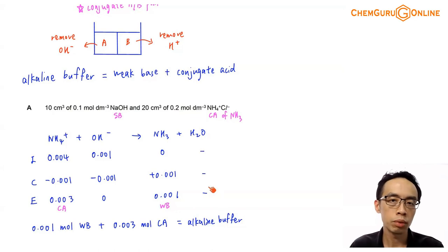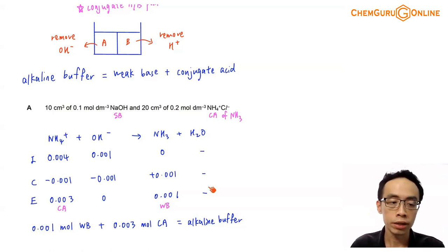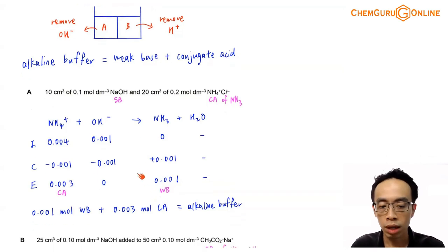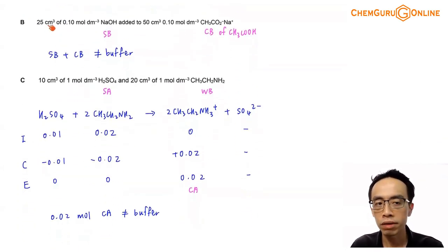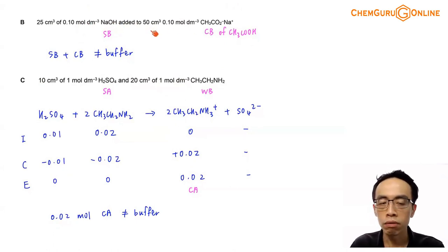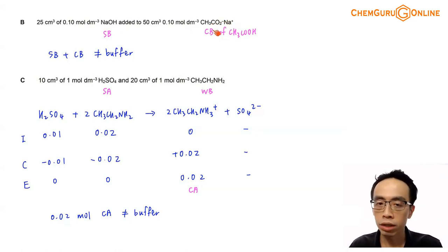So option A we will keep in mind. We will run through the other options to see whether we have another alkaline buffer and compare which one will maintain pH to a better extent. Now, how about solution B? Solution B has 25 cm³ of 0.1 mol per dm³ sodium hydroxide added to 50 cm³ of 0.1 mol per dm³ sodium ethanoate — and ethanoate is the conjugate base of ethanoic acid.